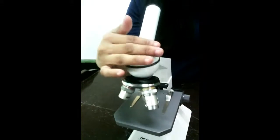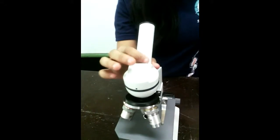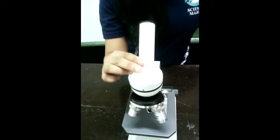The draw tube is the smaller cylinder attached to the upper part of the body tube that holds the ocular.